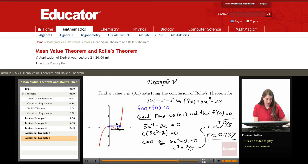Graphically, you can see from the picture of where that horizontal tangent happened that 0.737 looks reasonable. We've found a c value satisfying the conclusion of Rolle's theorem.